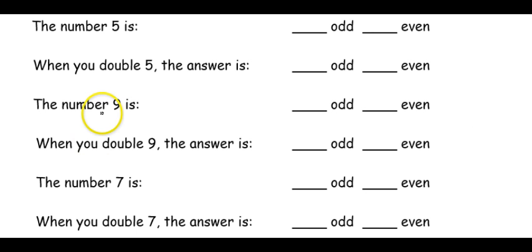That means the number 5 would have to be odd, because I could not make an array showing the same number on the top and the bottom to make the number 5. So 5 is odd. But if I double 5, meaning I have 5 on top and 5 on bottom, I get a total of 10. And that is even, because it's the same amount on the top row as in the bottom row.